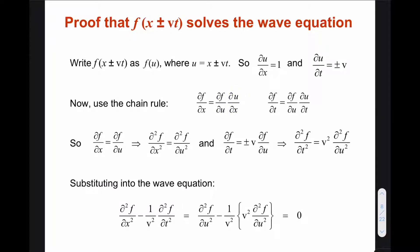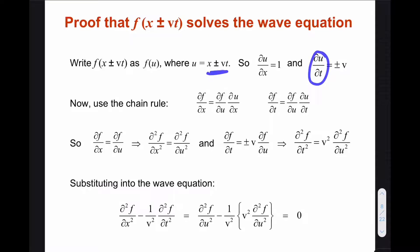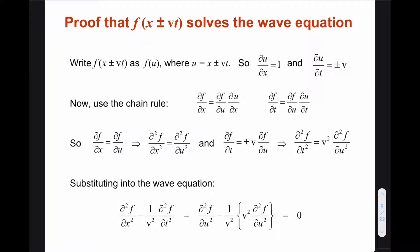Similarly, we can write d/dt of f to be equal to (d/du of f) times (d/dt of u). Now let us find the value of d/dx of u by differentiating with respect to x. We find that d/dx of u is simply equal to 1, and similarly d/dt of u is equal to ±v. Putting these values into their respective equations, d/dx of f equals d/du of f, and d/dt of f equals ±v times (d/du of f).